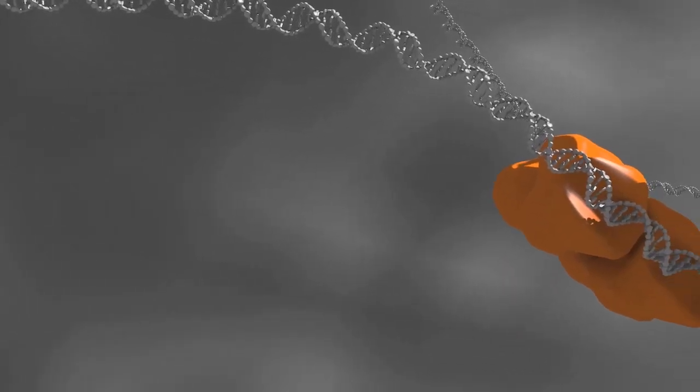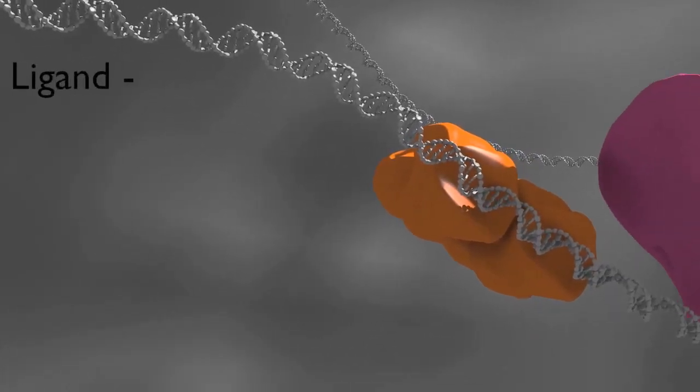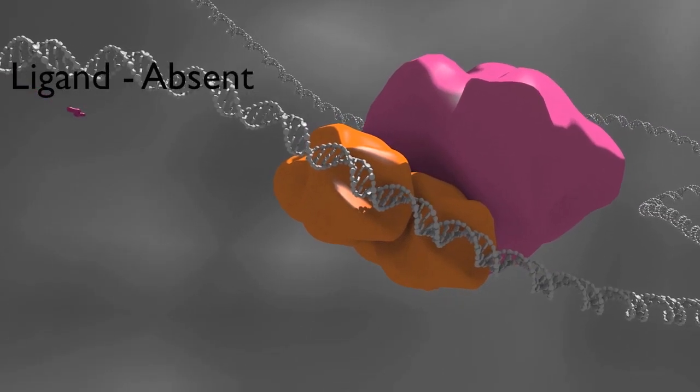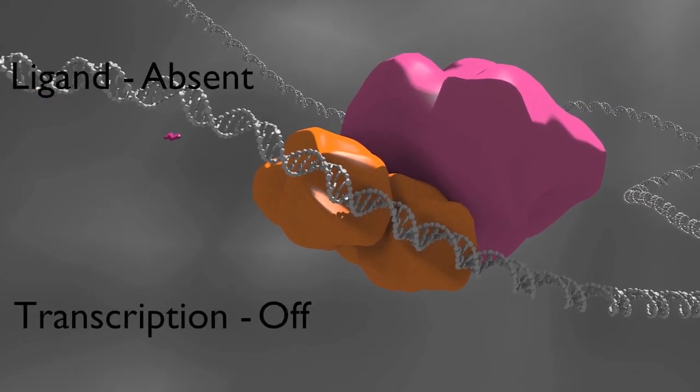Some types of nuclear receptor are always found in the nucleus and are capable of binding DNA. In the absence of ligand, these proteins recruit co-repressor complexes and repress transcription of the downstream genes.